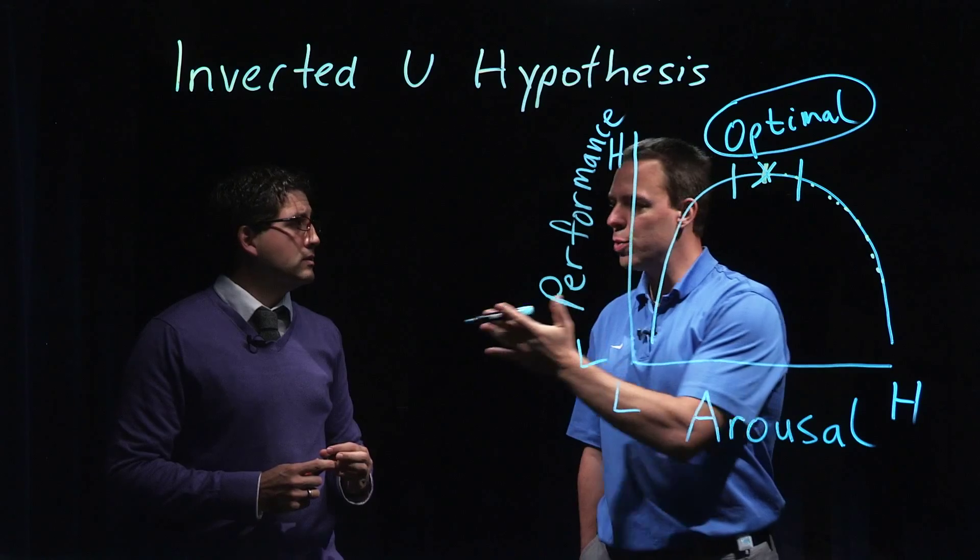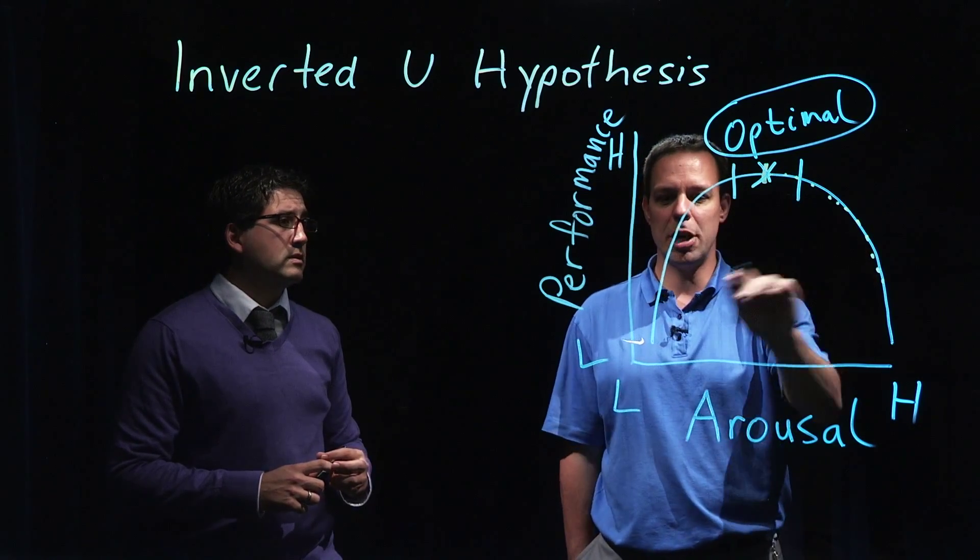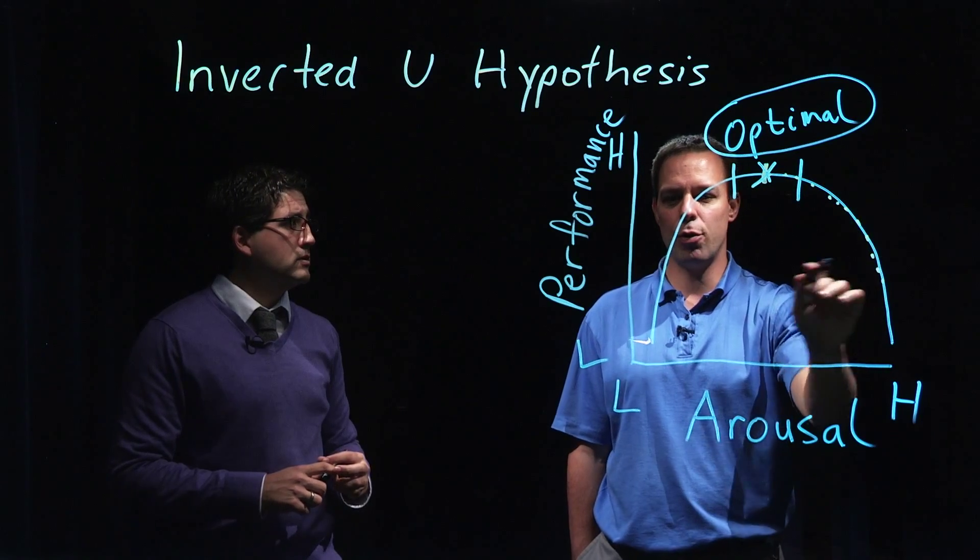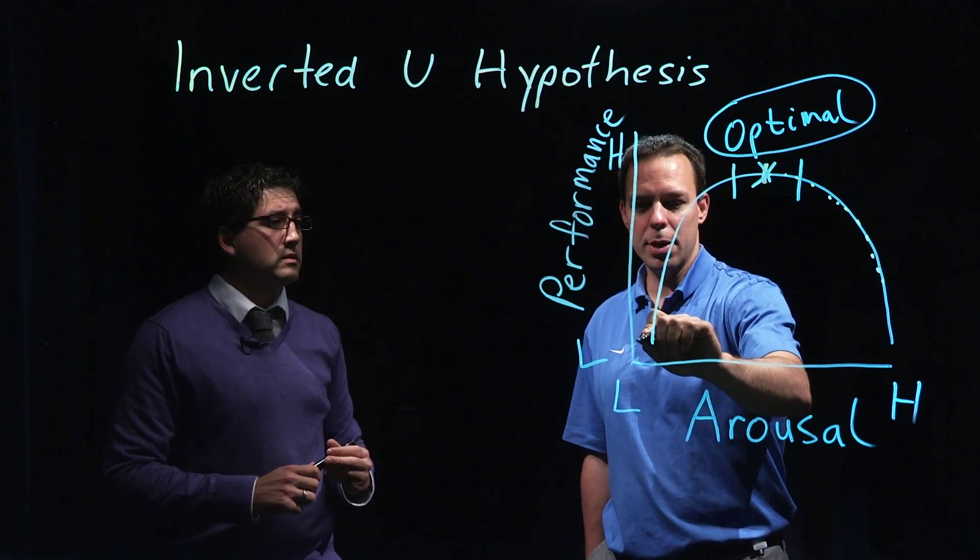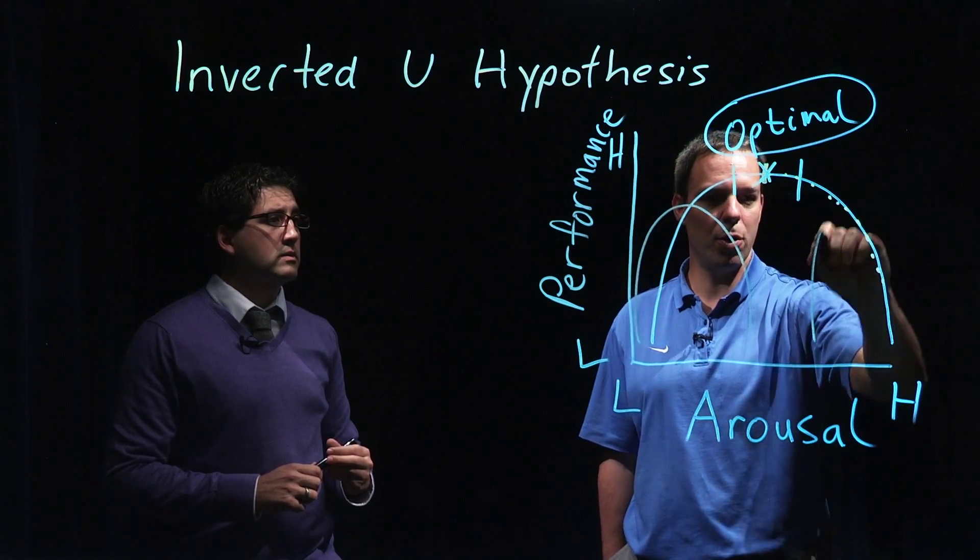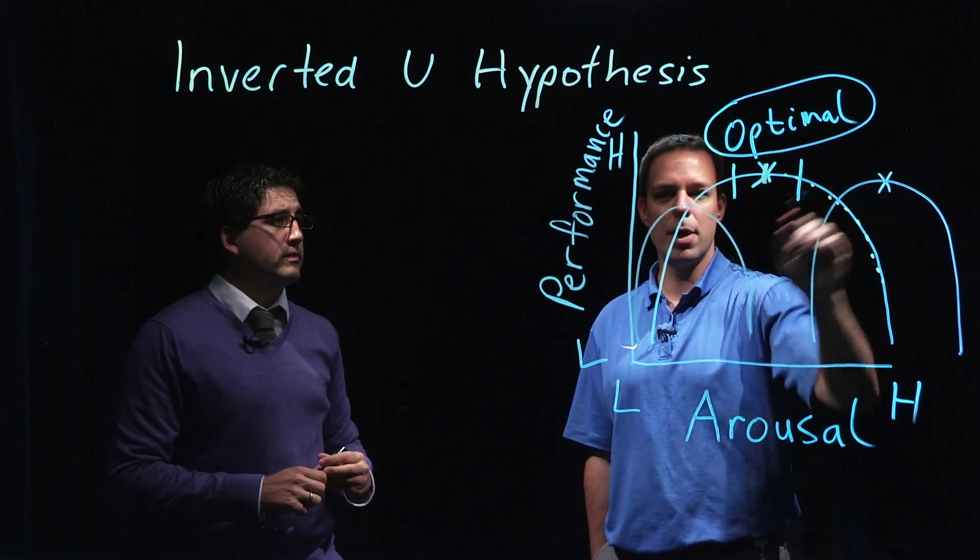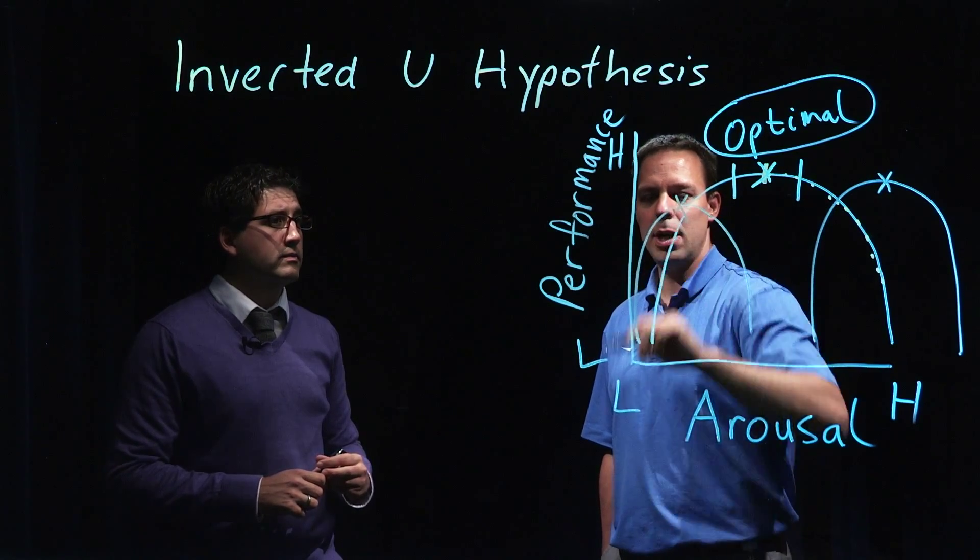One of the other problems is Ashwin's a 3 or a 4, I'm a 6 or a 7. So this inverted U suggests that we all have this same curve. When in reality, Ashwin's curve might be a little bit more like this. And my curve might be a little bit more like this. That for me, my arousal needs to be over here. Ashwin needs to be over here.